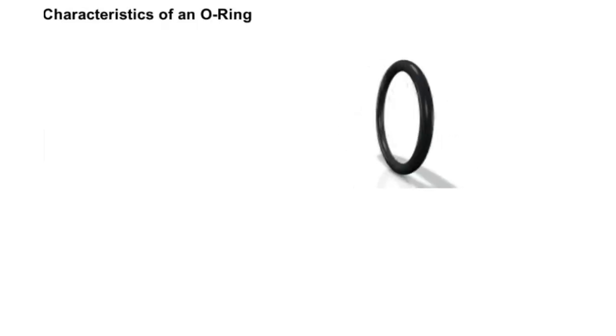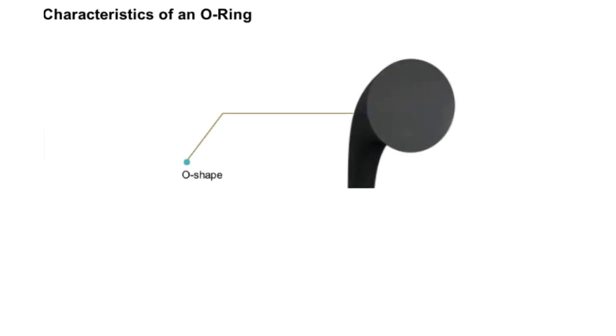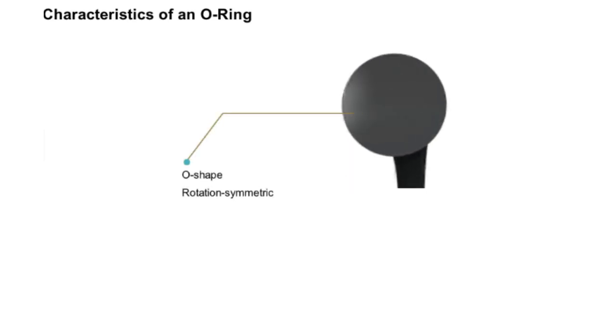What are the characteristics of the O-ring? O-rings are defined by their O-shape. They are rotation-symmetric and have a circular cross-section.